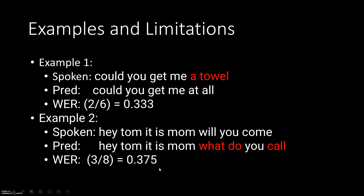One important thing to understand is that when we calculate the word error rate, it is important to normalize the text. What we mean by that is, in NLP, we normally do preprocessing on text. Steps in preprocessing could be to remove all punctuations or to lowercase all of the words. That's important when we calculate WER. The reason is that 'could' with a small C and 'Could' with a capital C would be counted as two different words, which is not what we want. So it's important to normalize the text before calculating WER. I want to point out that the examples I'm showing here are actually from a model called Whisper, which was released by OpenAI in October last year — this is the actual output from a Whisper model.